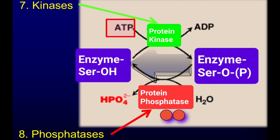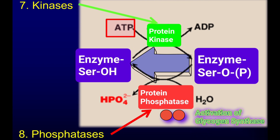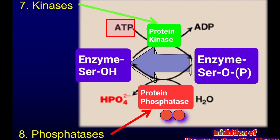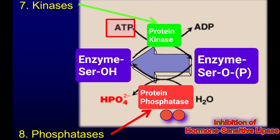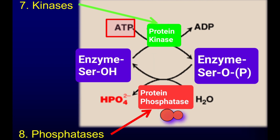As an example, the dephosphorylation of glycogen synthase will activate the enzyme and increase glycogenesis. On the other hand, the phosphorylation of hormone sensitive lipase, which is responsible for lipolysis of triacylglycerol in adipose tissue, results in the inhibition of that enzyme and the inhibition of lipolysis.